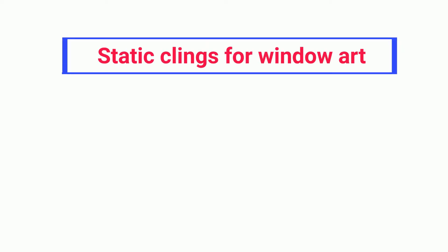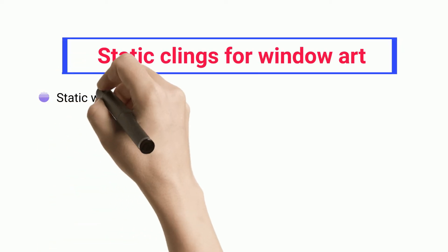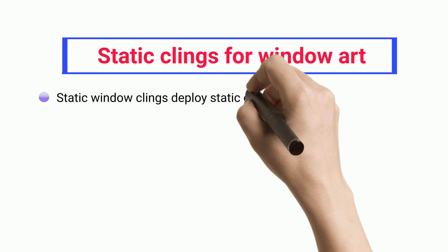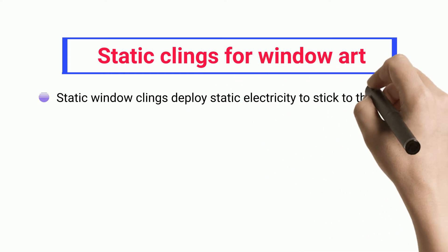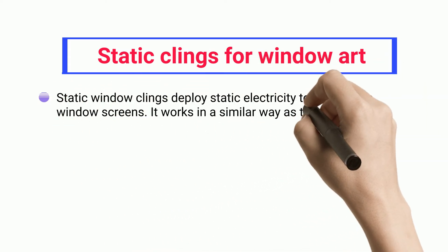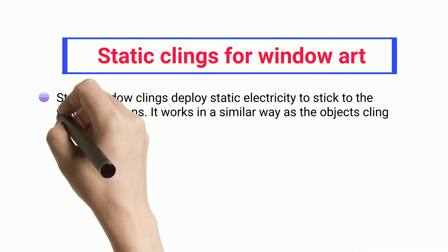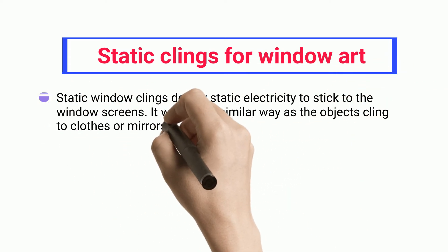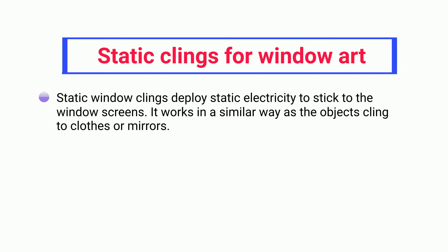Static window clings deploy static electricity to stick to window screens. They work in a similar way as objects cling to clothes or mirrors.